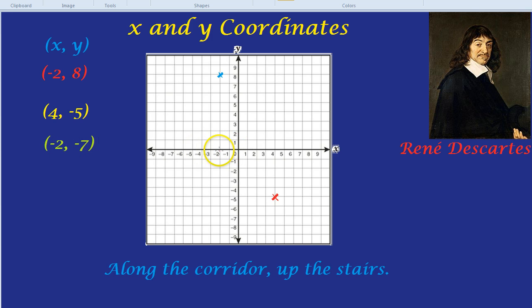So -2 for x. And usually in the exam it will be labelled x and y, so you know which one's which. Okay, so -2 along the corridor and 7 down the stairs. So down we go. Let's try not to trip over. There we are. Down the stairs. So (-2, -7) is right there.